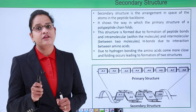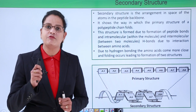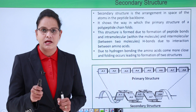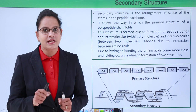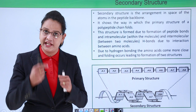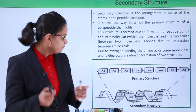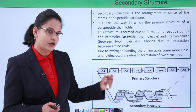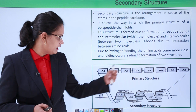The secondary structure is the arrangement of amino acids in space — how the atoms present inside the amino acids arrange themselves spatially. These amino acids A1, A2, A3, A4 are all linear in the primary structure.